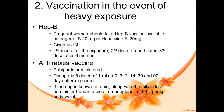For rabies exposure, Rabipur is administered in a total of six doses, each of 1 ml. The doses are given on: day zero (day of exposure), day 3, day 7, day 14, day 30, and day 90 after exposure.